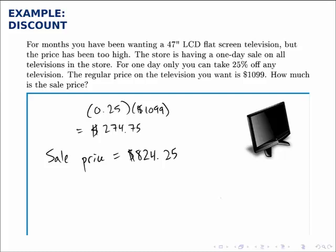The other way to do this is to notice that if you're taking off 25% of the regular price, what's left is 75% of the regular price. So we can directly calculate 75% of $1099 by multiplying 0.75 times the regular price.